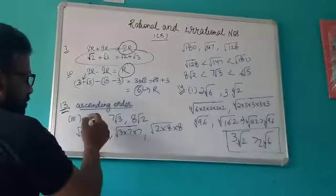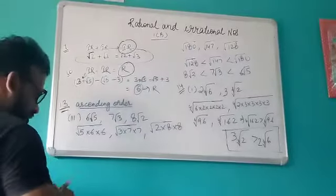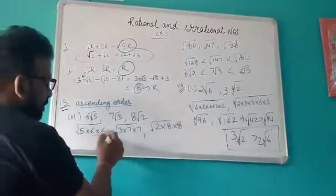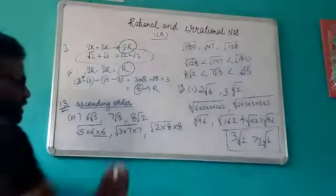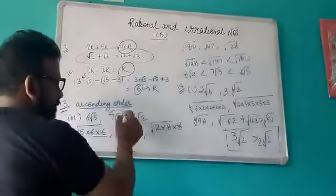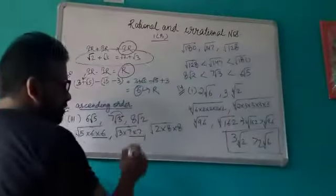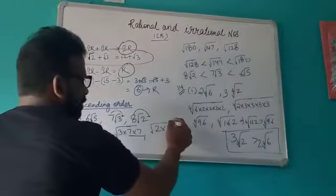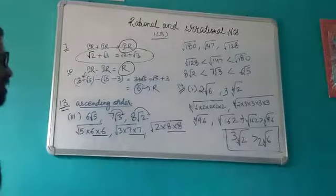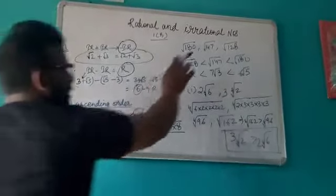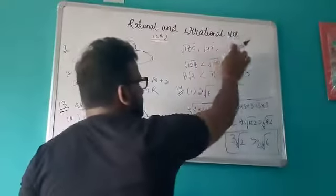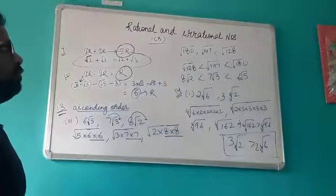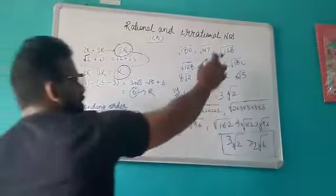Since these are square roots, when you take 6 inside the square root, you multiply 6 two times. Similarly, when 7 goes inside the square root, you multiply 7 two times, and 8 also two times. Now all quantities are inside the square root, so you can solve them. You get √180, √147, and √128. Now you can compare these three numbers like usual numbers.